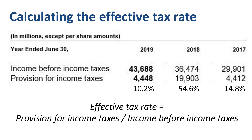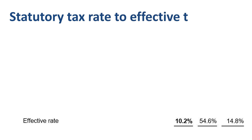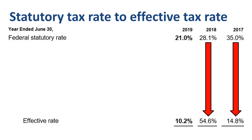Let's put those effective tax rates per year at the very bottom of the page and reconcile from the statutory tax rate — the default of what you expect a company's tax rate to be — to the effective tax rate. We put the US federal statutory tax rate at the top of the page, and need to analyze how Microsoft got from 35% down to 14.8% in 2017, up from 28.1% to 54.6% in 2018, and down from 21% to 10.2% in 2019.